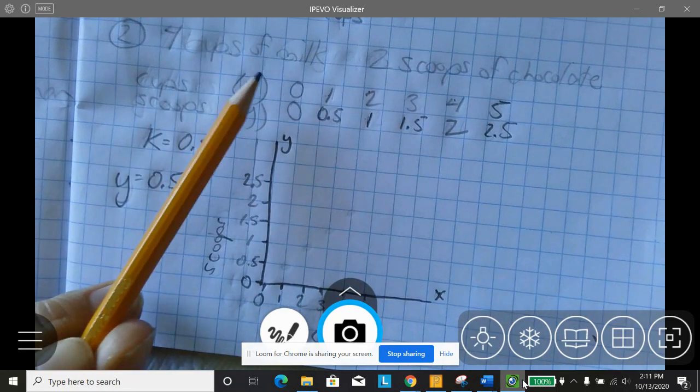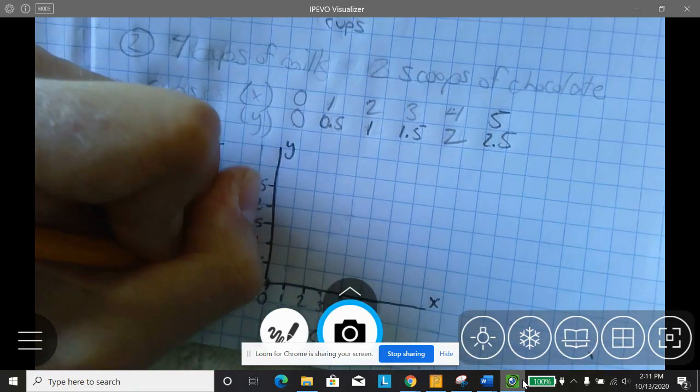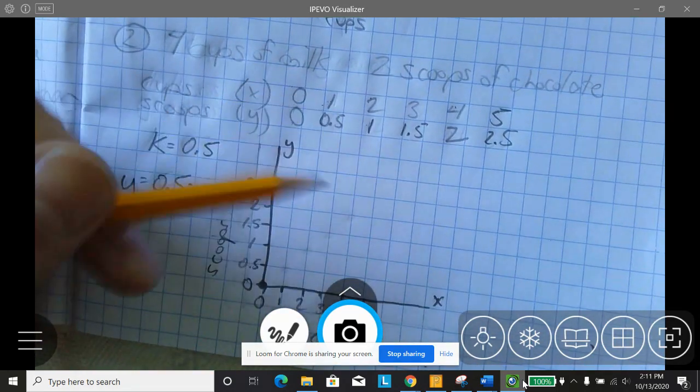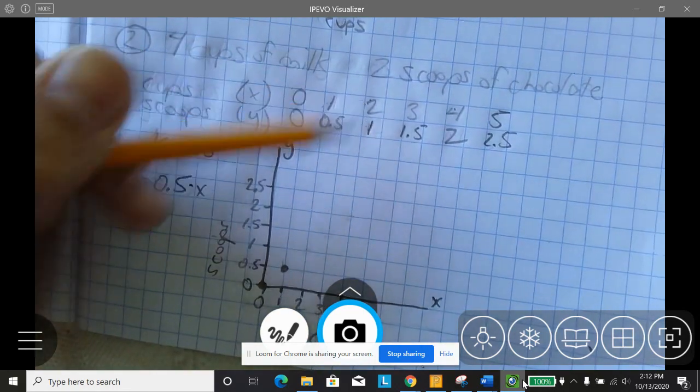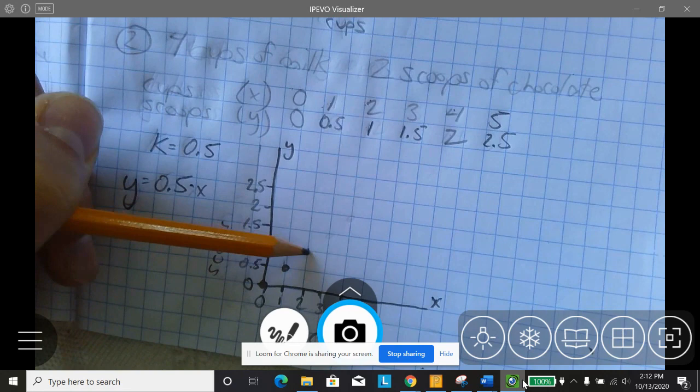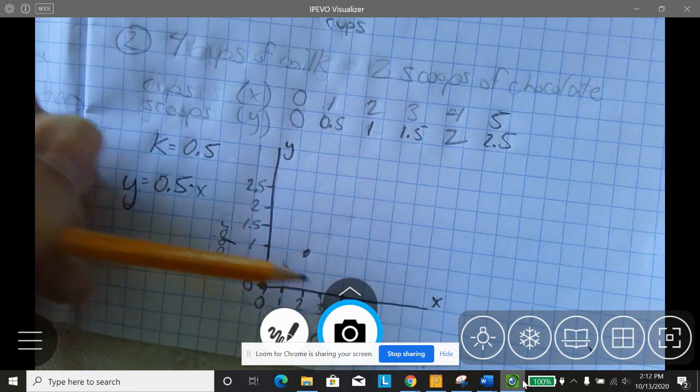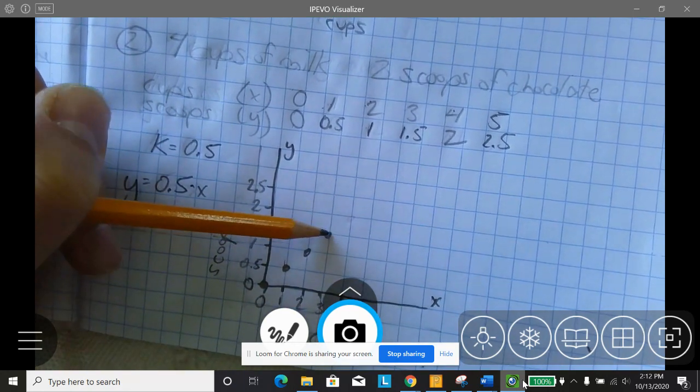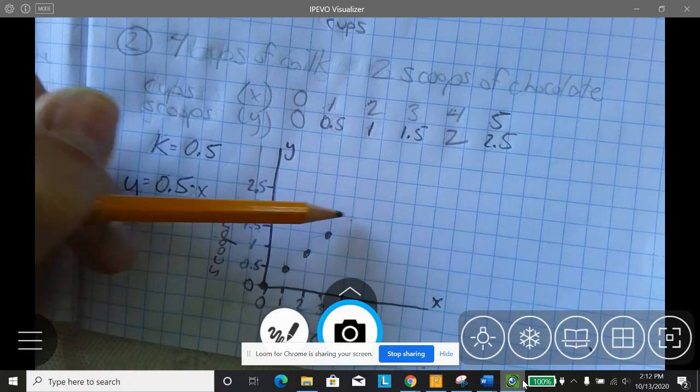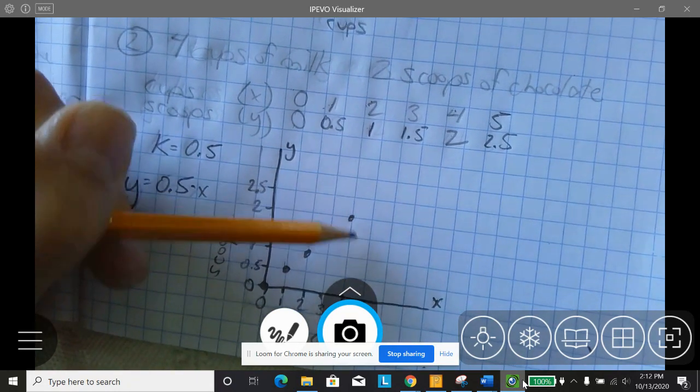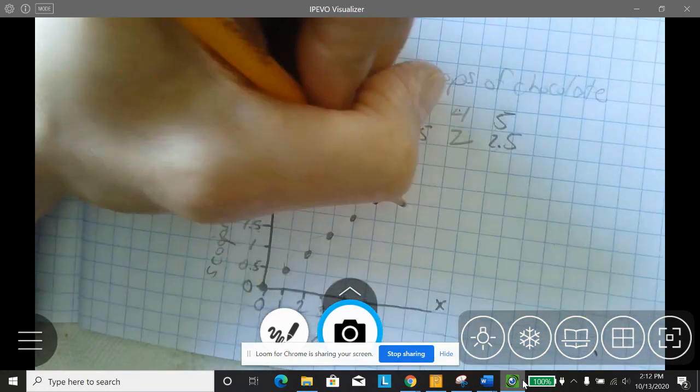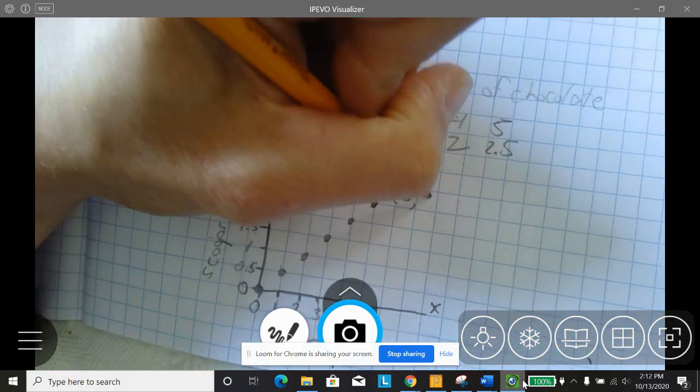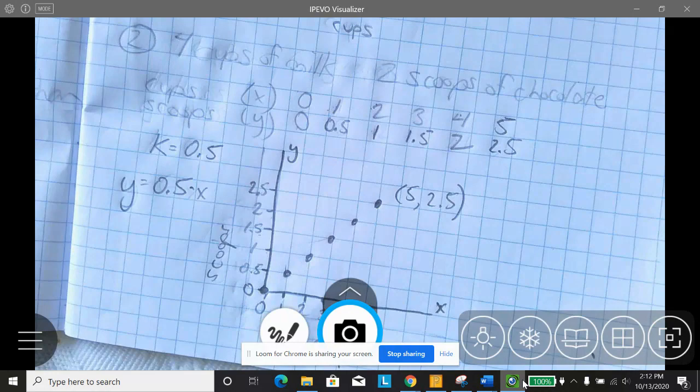And 0 goes with 0. 0 cups goes with 0 scoops. 1 cup goes with 0.5 scoops. 2 cups goes with 1 scoop. 3 cups goes with 1.5 scoops. 4 cups goes with 2 scoops. And 5 cups goes with 2.5 scoops. And this last point, again, is 5 cups goes with 2.5 scoops.